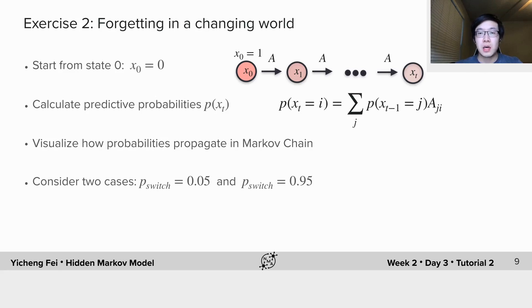After that, use our provided code to visualize how probabilities propagate over time in a Markov chain. If the switching probability is small, you should see an exponential decay from 1 towards 0.5, like the one in the last slide.